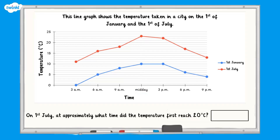We can also read data from the graph the other way around. On the 1st of July, at approximately what time did the temperature first reach 20 degrees? We can only find the approximate time and not the definite time, because we don't know exactly what happened to the temperature between the points on the line. This time we need to start by drawing a horizontal line from 20 degrees to the point where it reaches the red line, then draw a vertical line down to the x-axis. The point where we meet the axis is about one third of the way between 9am and midday, so the temperature reached 20 degrees at approximately 10am.